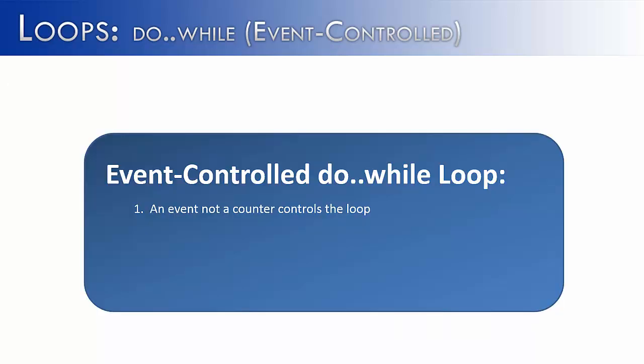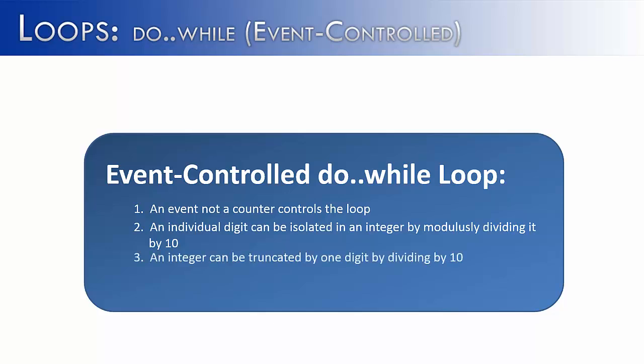Let's sum up about event-controlled do-while loops. It's important to note that an event controls the loop, not a counter. We weren't counting up to a certain value. We were just saying, when we're done with the individual digits, we know that the loop is done. It's kind of like a login on a computer. We only know that the loop is done when someone has entered in the correct password. And then, and only then, will the program continue on. Let's talk a little bit about the algorithm that we used inside of this video. An individual digit of an integer can be isolated by modestly dividing it by 10. That's going to give us the rightmost digit. An integer can be truncated by one digit by dividing it by 10. And all digits have been reached when a number reaches 0. This was the event on which we based our loop on.